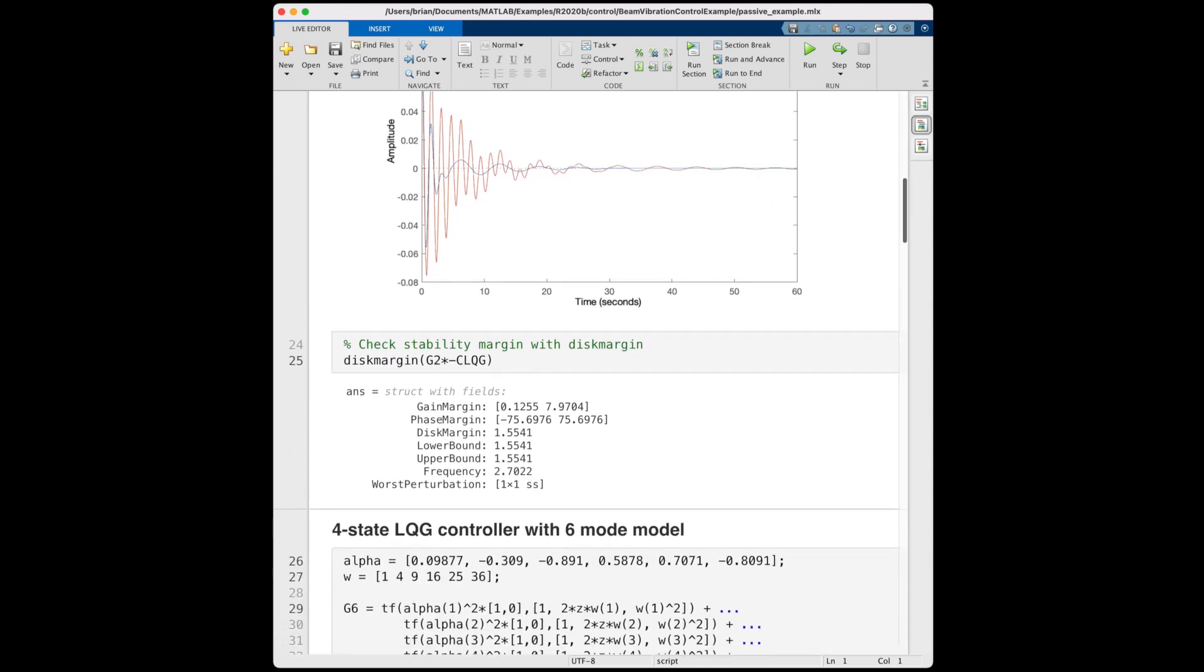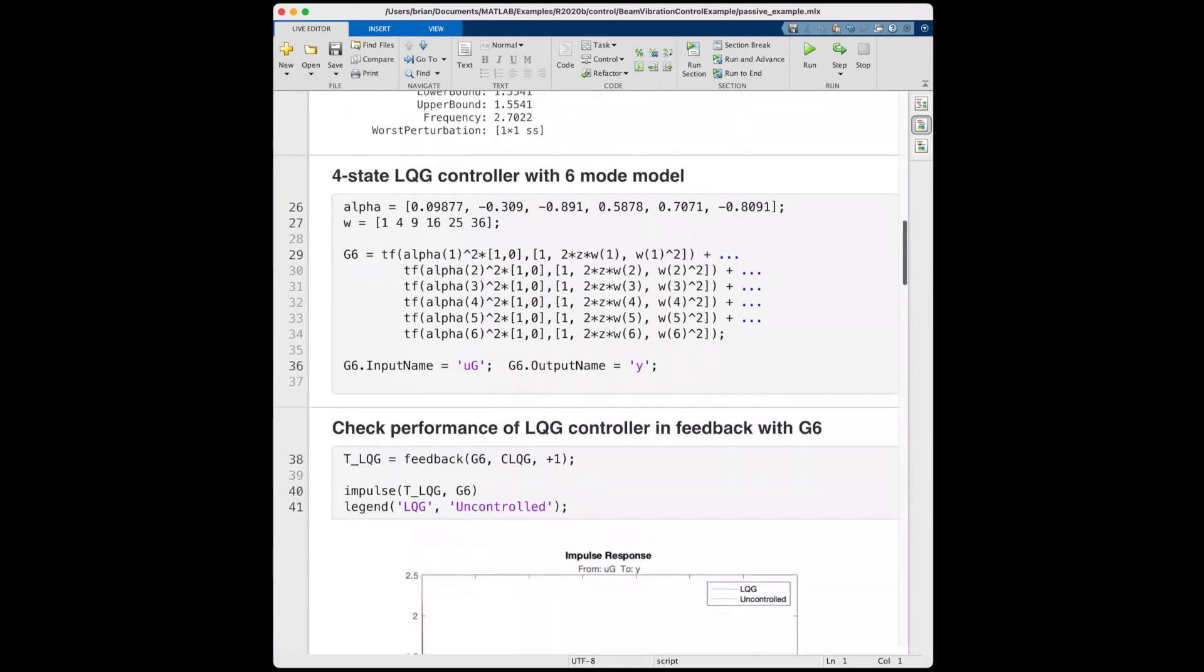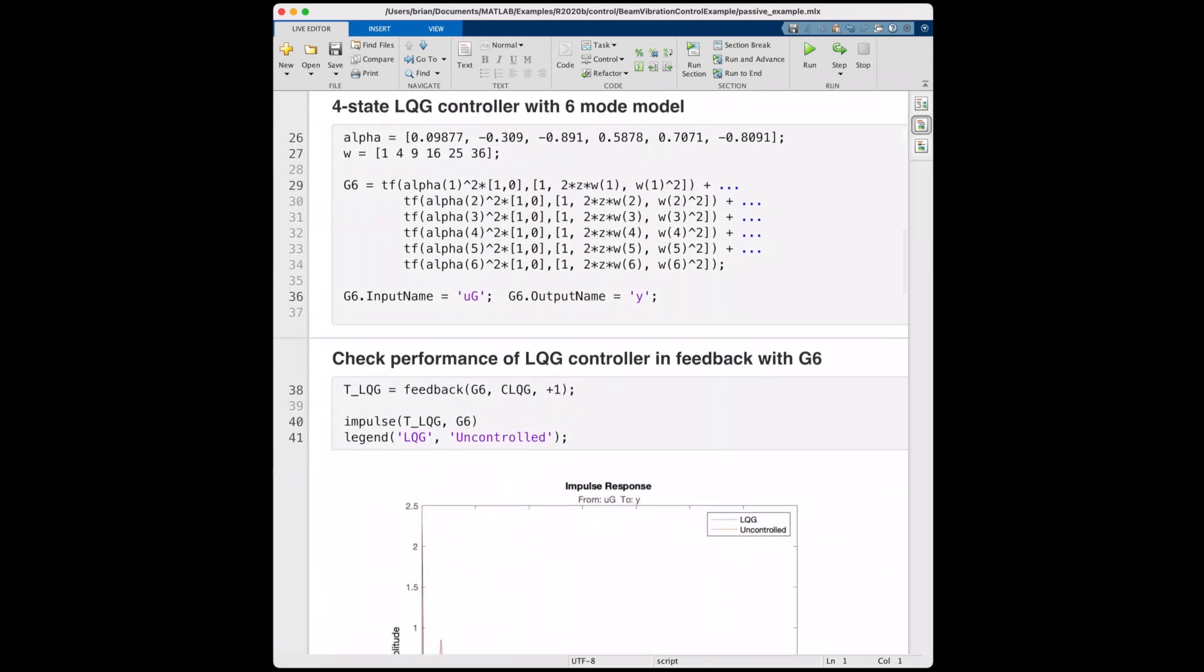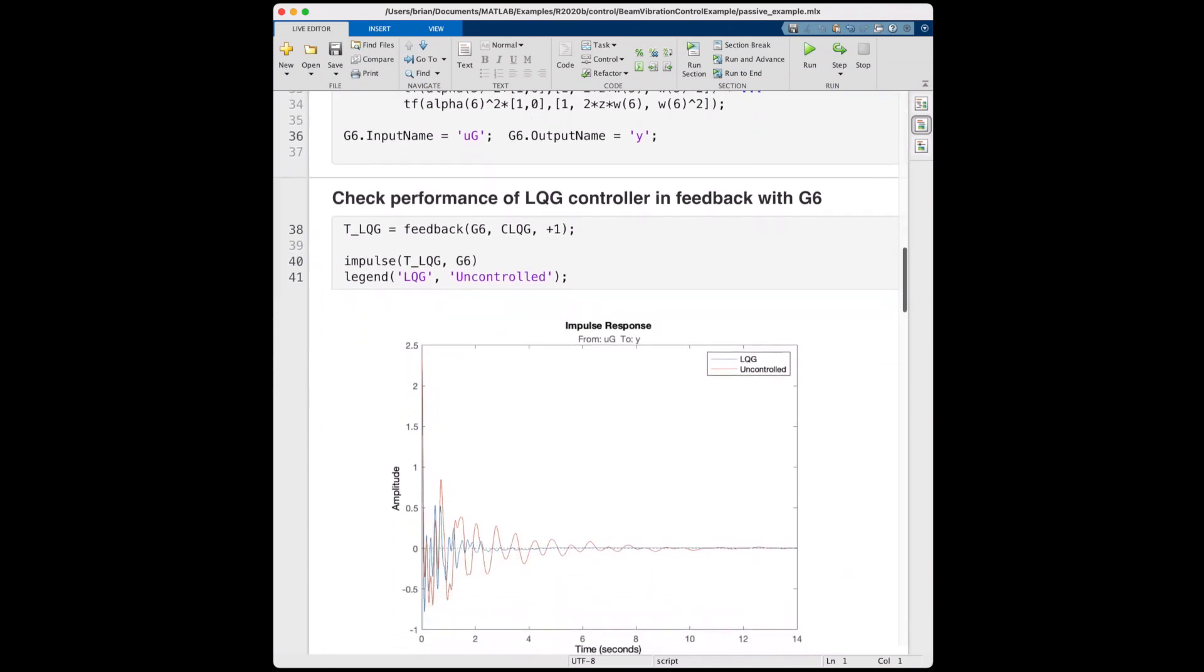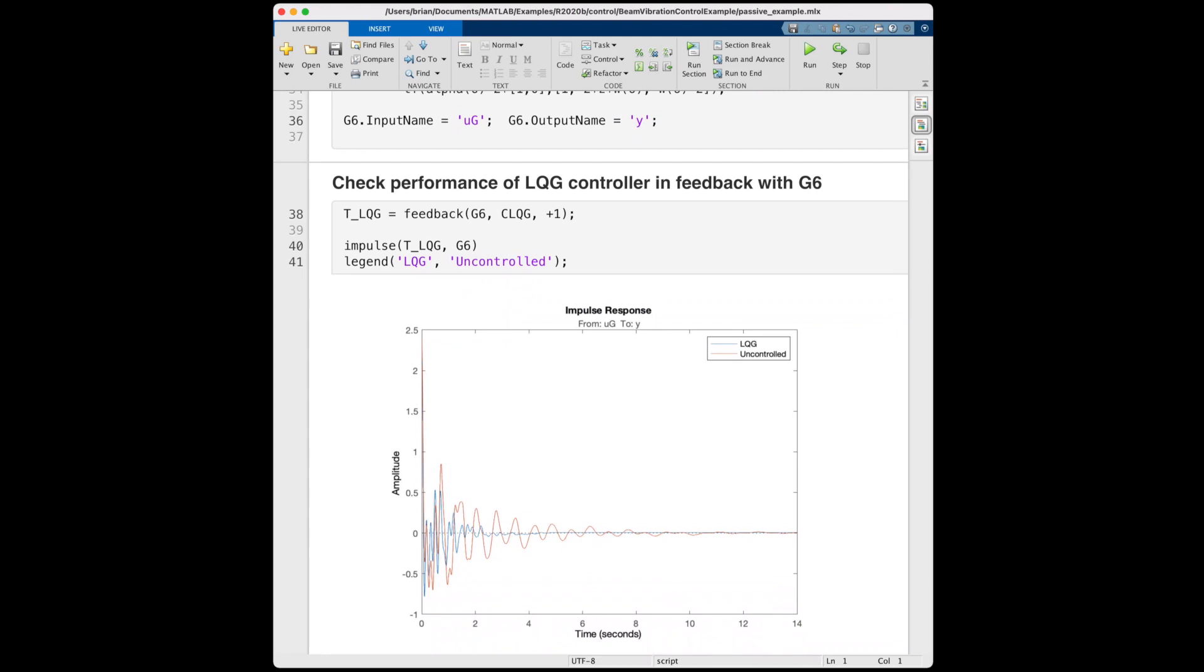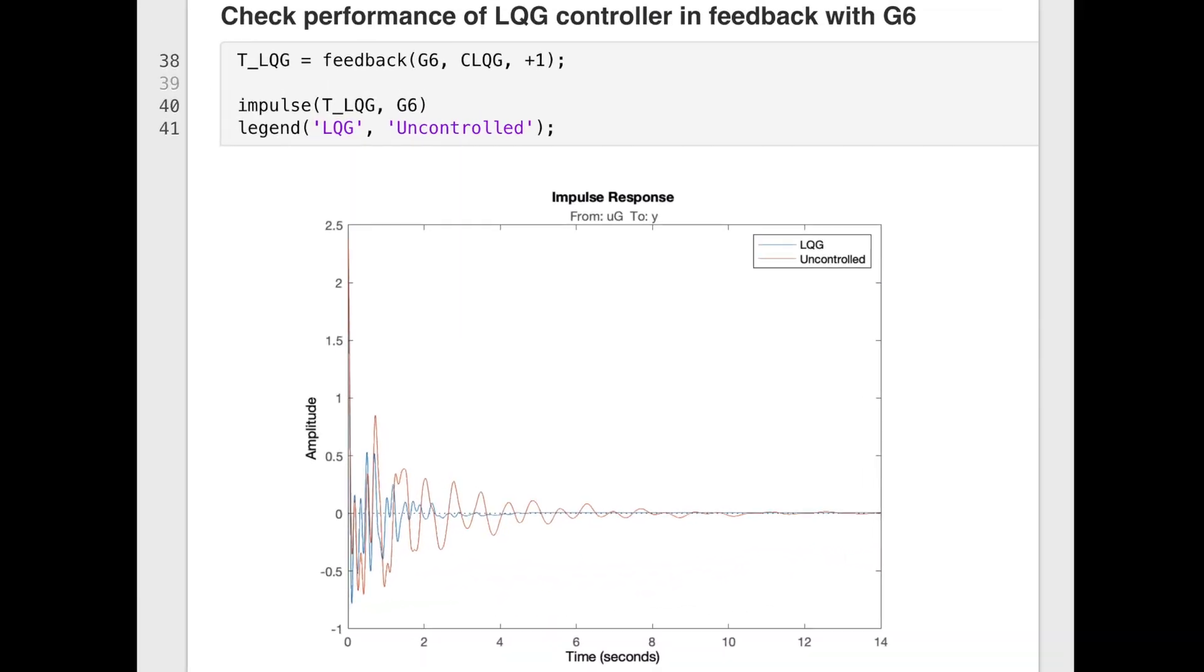Here this states that we can handle an uncertainty in gain between about 0.1 and 8, and an uncertainty in phase between about plus or minus 75 degrees. That's a huge amount of margin, which is great. But let's see how this controller holds up with a higher fidelity model of our system. I wonder how much of this margin we're eating into when we add in the additional flexible modes into the beam model. So that's what I'm doing here. I'm adding in four more modes, so the first six modes in total, and creating a new plant model called G6.